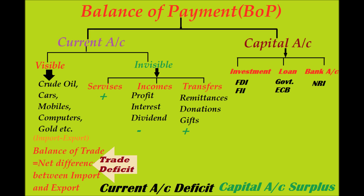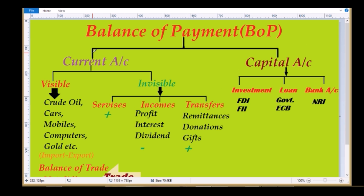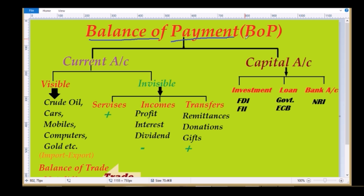The definition gives the main idea about Balance of Payment, but it doesn't tell us what the components or elements of Balance of Payment are. Balance of Payment has two main components: the first one is the Current Account and the second one is the Capital Account. These are the main components of Balance of Payment.